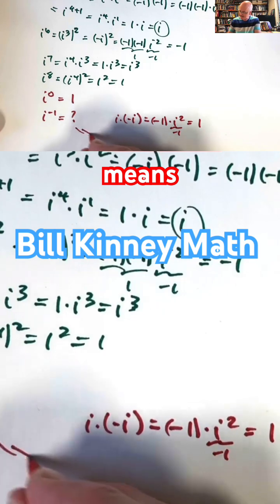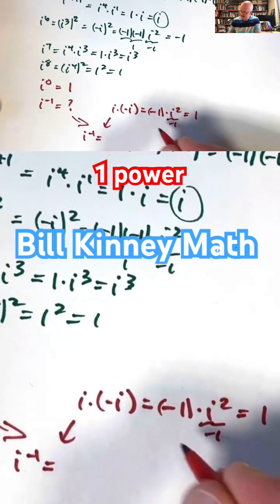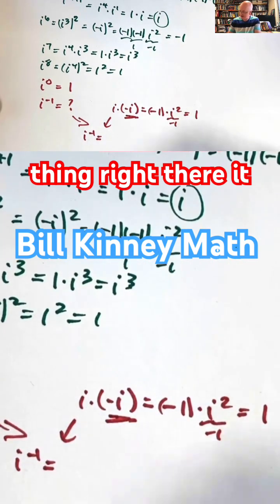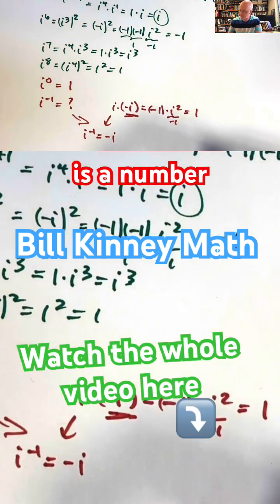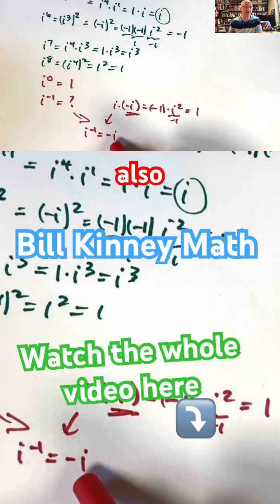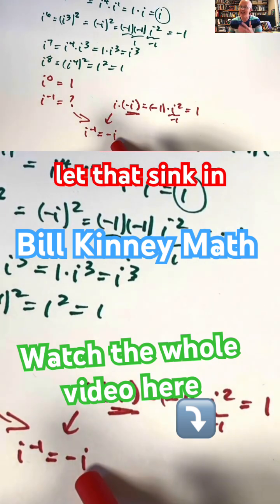This means that i to the negative 1 power is, in fact, that thing right there. It is negative i. Amazing. i is a number whose multiplicative inverse is also its additive inverse. Let that sink in.